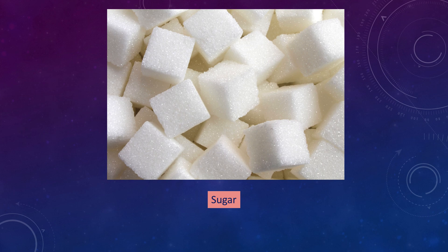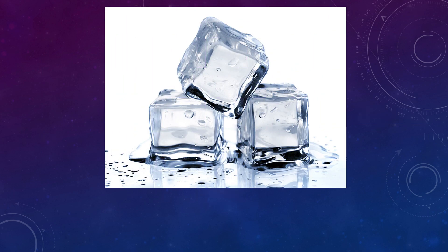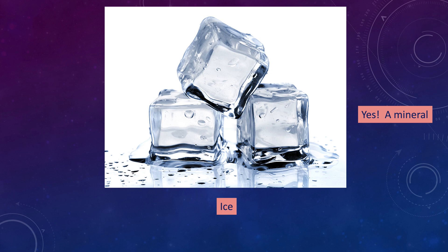Number three, this is a picture of sugar. Are sugar crystals a mineral? The answer is no, because sugar comes from sugar cane, which is an organic thing — a plant. And the final one, which is a tricky one, is ice. Is ice a mineral? The answer is yes — you can find ice naturally on Earth. Some would argue you can't find ice at room temperature, but it is naturally occurring, so technically ice is a mineral.